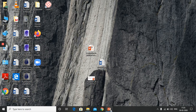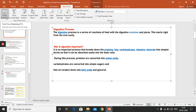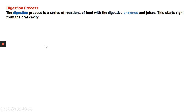We are going to talk about the process of digestion in human beings. In the last two videos we studied about the digestive system and the various organs that take part in it. Today we will continue with that topic and understand more about the process of digestion, which includes all the enzymes. First, we will understand that digestion is a series of reactions of food with the digestive enzymes and juices, starting right from the oral cavity.